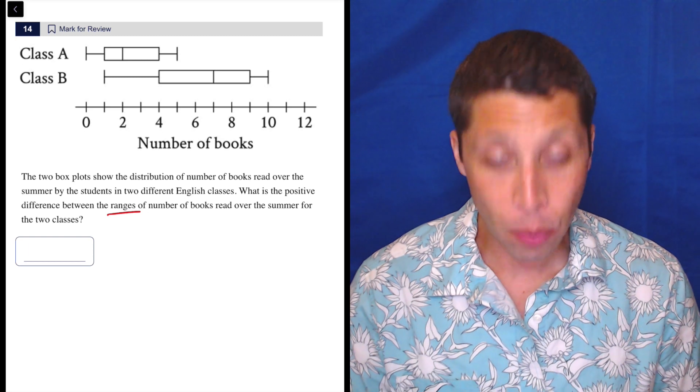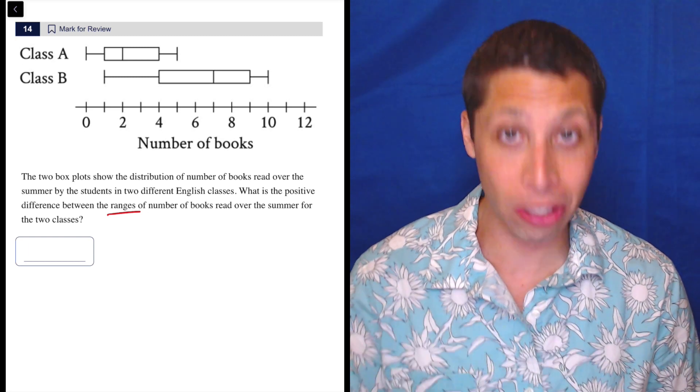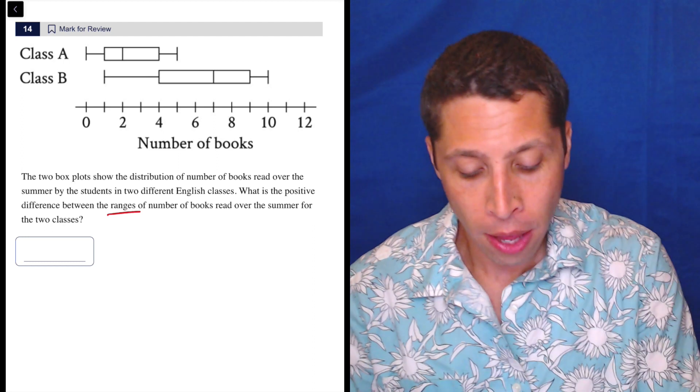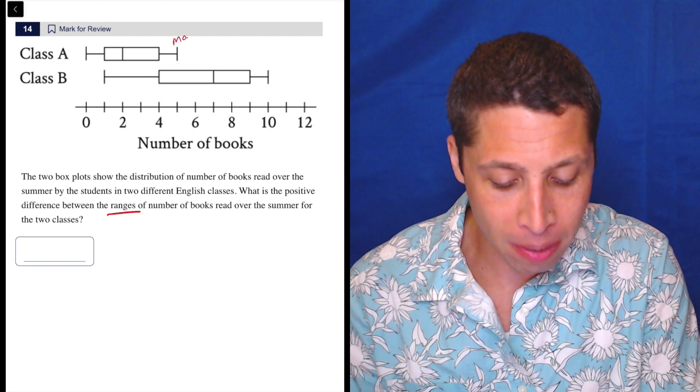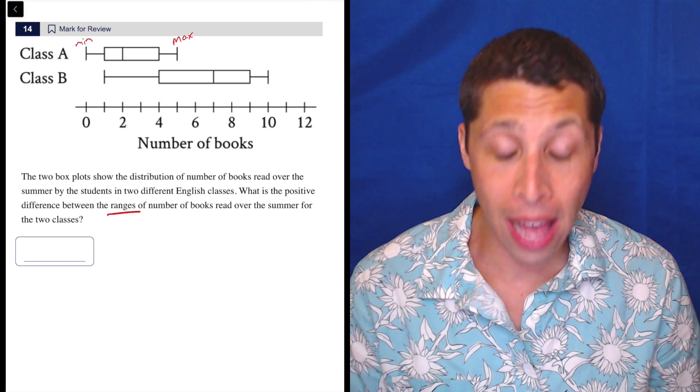We want to look at the maximum and the minimum, which are given by what are sometimes called the whiskers, the box and whisker plot. The whiskers are here. So the maximum is going to be the one to the right in this case, and the minimum is going to be the one to the left.